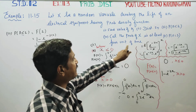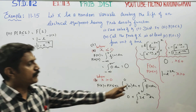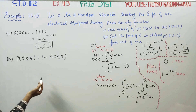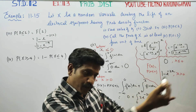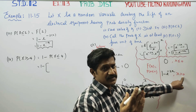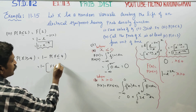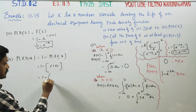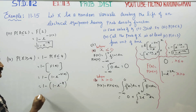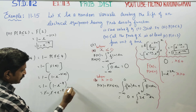Calculate the probability of X being at least 4 units of time. At least 4 means x greater than or equal to 4. This equals 1 minus probability of X less than or equal to 4, which equals 1 minus F(4). Substituting: 1 minus (1 minus e to the power minus 8). The 1s cancel, giving the answer e to the power minus 8.